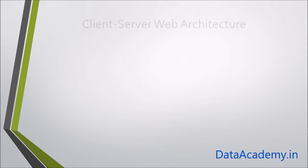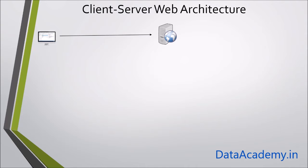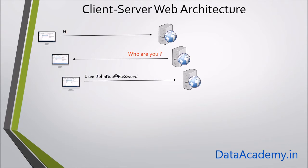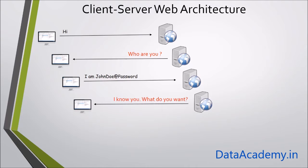There is a handshake that happens between a client and a server. The client initiates a connection saying it wants to request something. The server responds asking who the client is and requesting authentication. The client responds with credentials, and if valid, the server acknowledges that the client is authenticated and asks what service is needed.